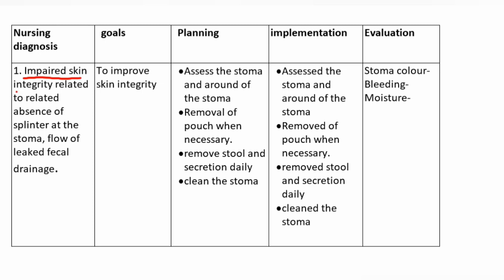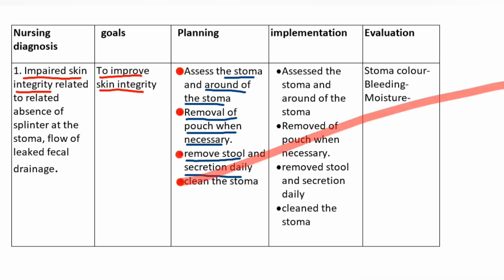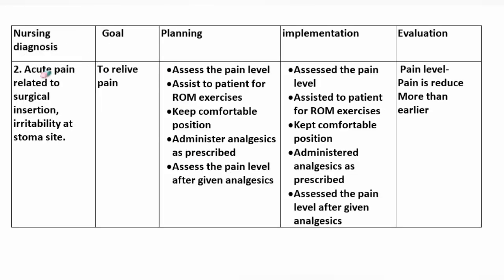Nursing diagnosis number one: impaired skin integrity related to absence of sphincter at the stoma and flow of leakage of fecal drainage. Goal: to improve skin integrity. Planning: assess the stoma and around the stoma, remove the pouch when necessary, remove stool and secretion daily, clean the stoma. Evaluate stoma color, bleeding, and periostomal skin.